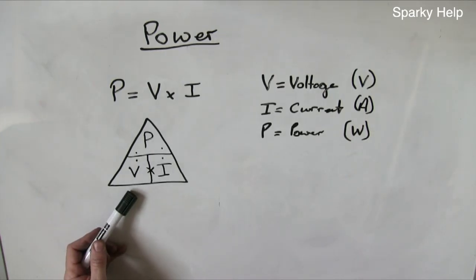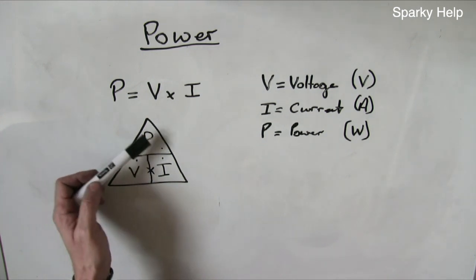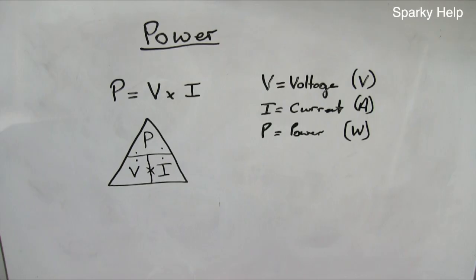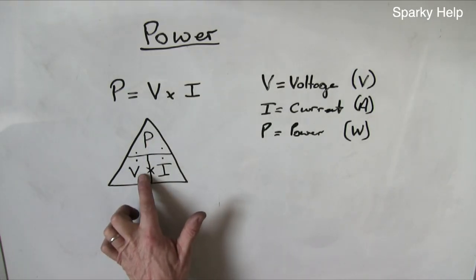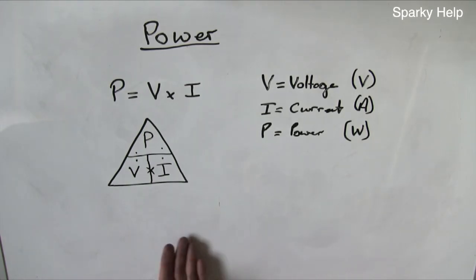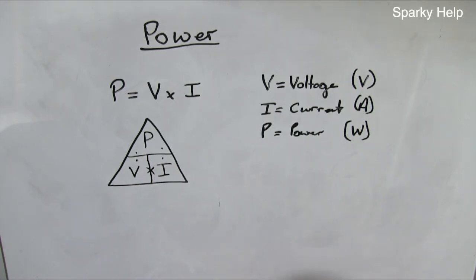This power formula, in this format, can be used and is very useful in a triangle — it would get you out of a lot of problems. Finding out, for instance, how much current a shower would draw — this is a useful formula. So if you want to find the current, it is power divided by volts. Manufacturers tend to give you information measured in power, which might be in kilowatts.